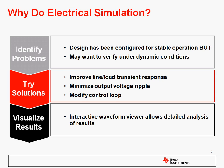So you can try solutions such as improved line and load transient response, changing components to improve those parameters. You can try minimizing your output voltage ripple, and you can modify your control loop to achieve different stability criteria. You can also visualize the results in an interactive waveform viewer that allows you to do detailed analysis of your simulation results.